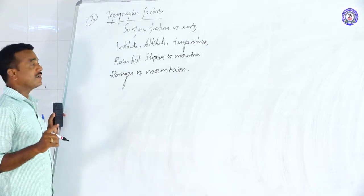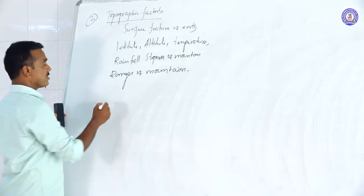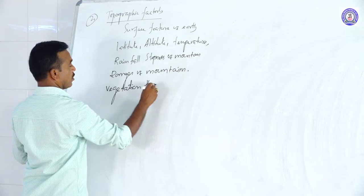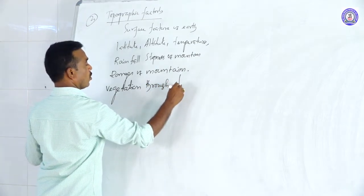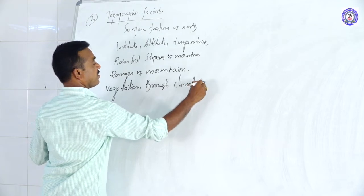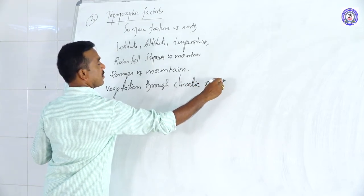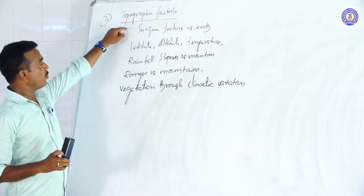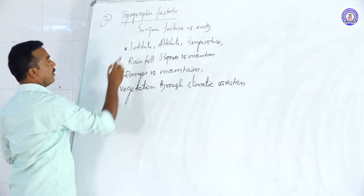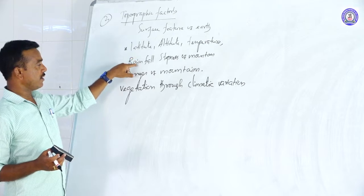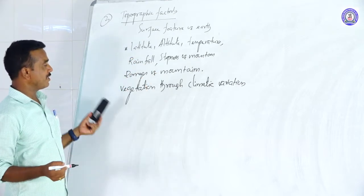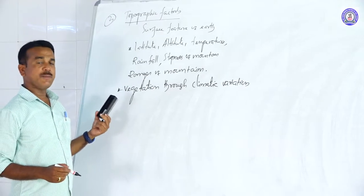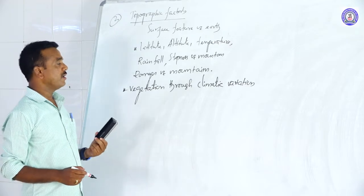Topographic factors affect vegetation through climatic variations and surface features of the earth. They include altitude, temperature, rainfall, steepness of mountain, and range of mountain — topographic factors which affect vegetation through climatic variations.